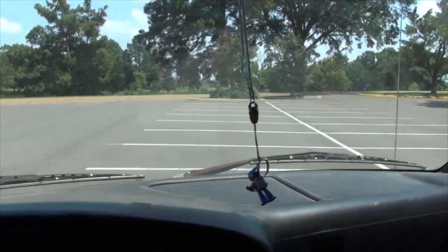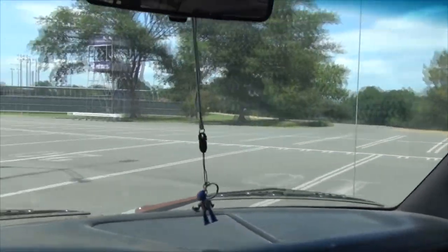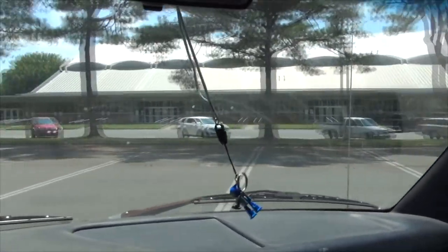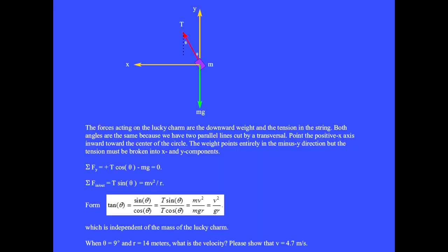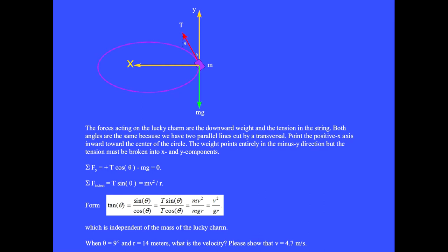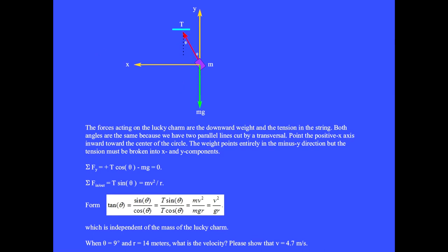Some of us have a lucky charm that hangs from the rear-view mirror of our car. If you drive in a circle of radius R at constant velocity, the lucky charm will hang at an angle theta from the vertical. The forces are the downward weight and the tension in the string. Both angles are the same because we have two parallel lines cut by a transversal. The positive x-axis points inward. The sum of the y-components of forces is plus T cosine theta minus Mg equals 0. The sum of the inward forces is T sine theta equals Mv² over R, and the inward component of the tension supplies the centripetal force.